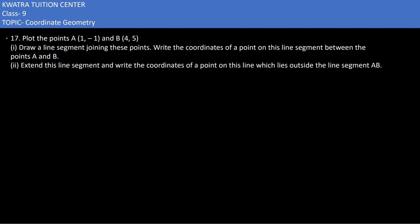Here in the 17th part it says plot the points A(-1, 1) and B(4, -5). They are saying draw a line segment joining these two points. Part (i): Write the coordinates of a point on this line segment between the points A and B.